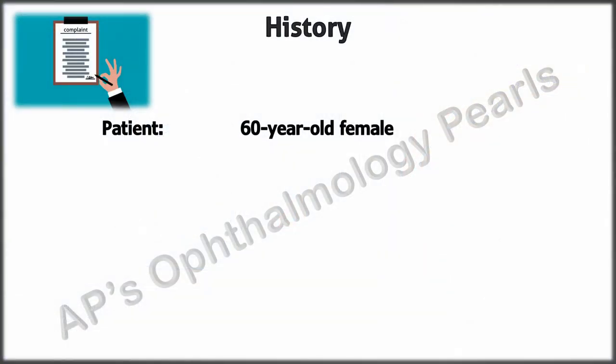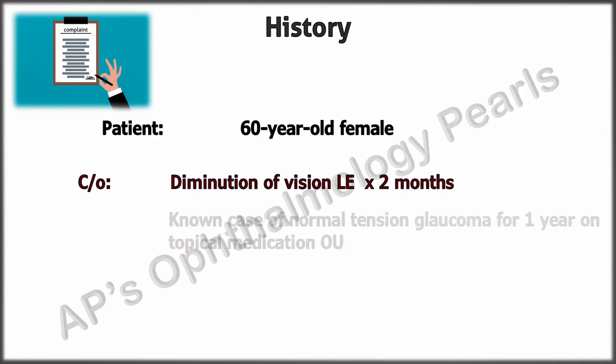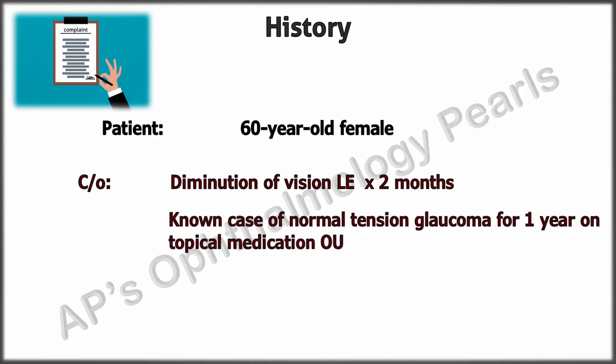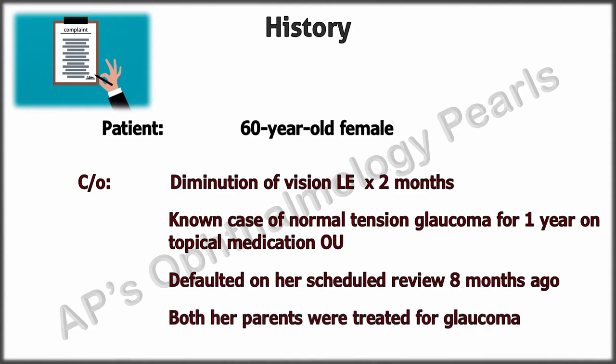A 60-year-old female presented with diminution of vision in the left eye for two months. She was a known case of normal tension glaucoma for one year on topical medication bilaterally and had defaulted on her scheduled review eight months back. Both her parents were treated for glaucoma.